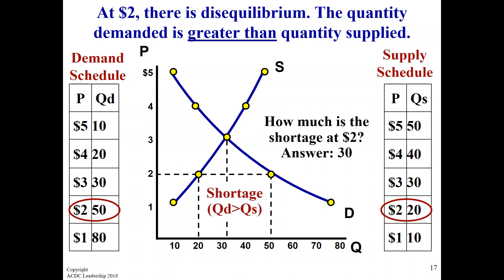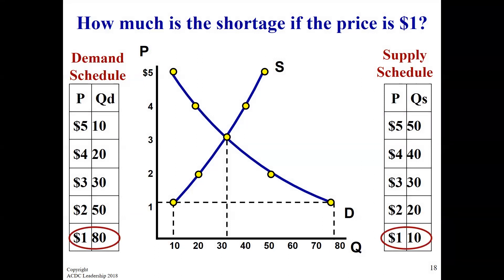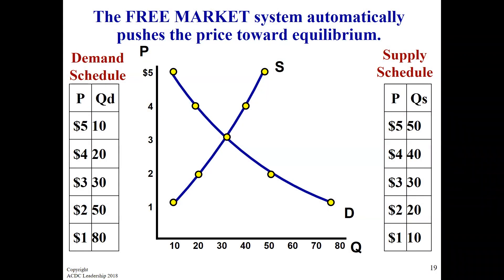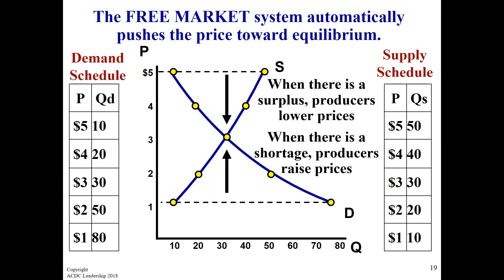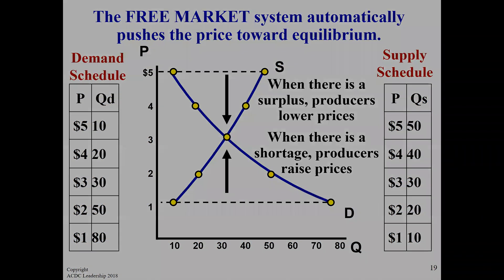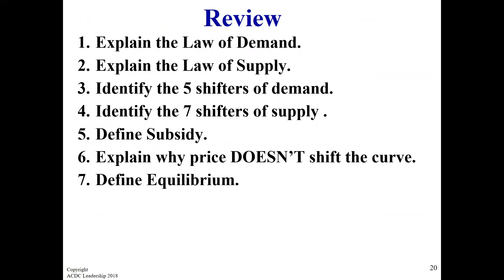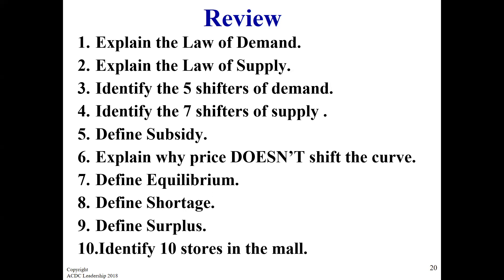Just to make sure, I'll go again — below at $1, Oliver: how many shirts do people want, and how many do we have? So we have a shortage. Any questions on equilibrium, disequilibrium, shortage, surplus — the four concepts we hit so far? When there's a surplus, price goes lower. When there's a shortage, price goes up. Quick review — talk to the person next to you, go over these ten concepts. I'll give you two or three minutes.